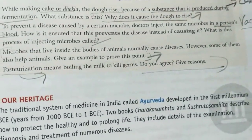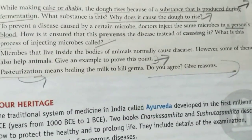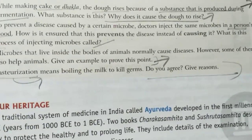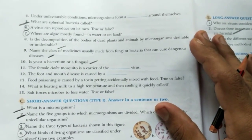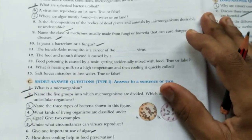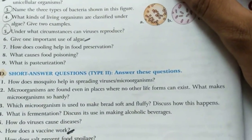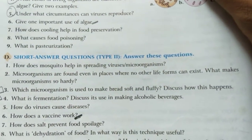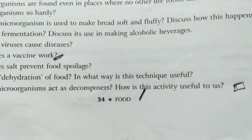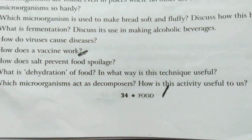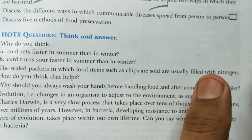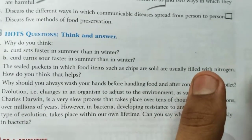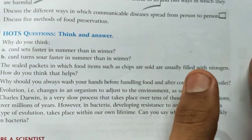Today your lecture is complete. You have to complete all the remaining questions — questions at page 34, numbers B13, B14, B15, C7, C8, C9, D7, D8, and E4, which asks you to discuss five methods of food preservation. You will receive the full lesson plan. Hope you enjoyed today's lecture. Thank you, have a nice day.